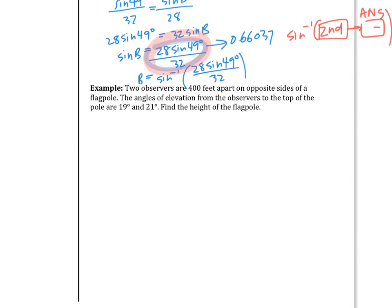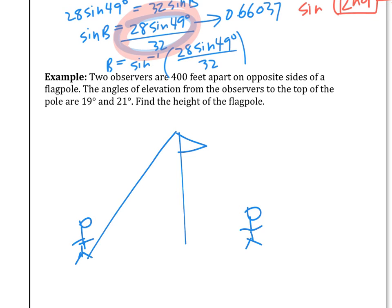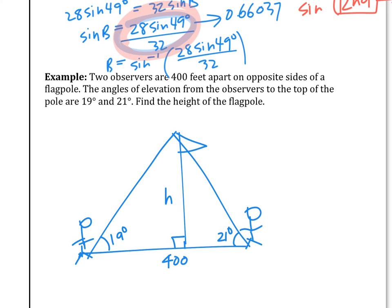Now a word problem. Two observers are 400 feet apart on opposite sides of a flagpole. The angles of elevation — meaning they're looking up to the top of the pole — are 19 degrees and 21 degrees. Find the height of the flagpole. Put everything you know together and try to solve it.